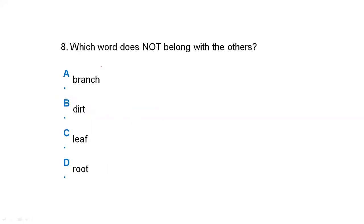Which word does not belong with the others? Option A is branch, option B is dirt, option C is leaf, and option D is root. Clearly, branch, leaf, and root are all parts of a plant. Dirt (dust/soil) is different from all of them. So our correct answer is option B, dirt.